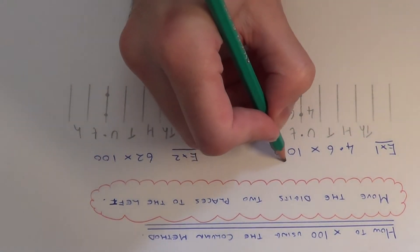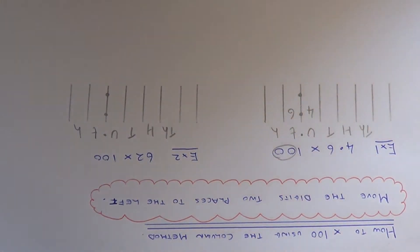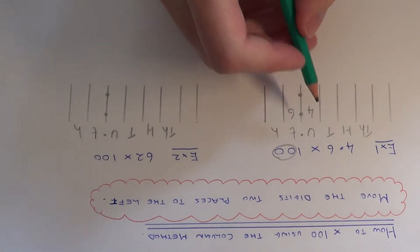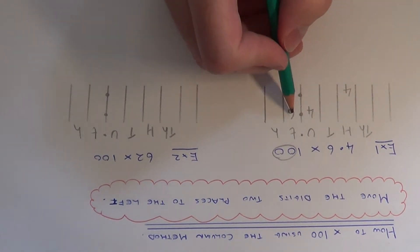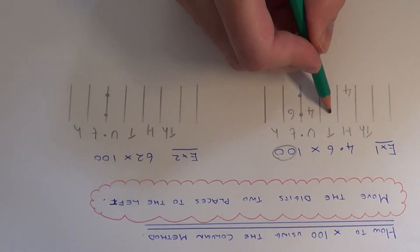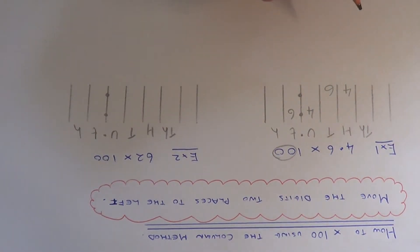Since we're multiplying by 100, we need to move the digits two places to the left. Let's move the 4: one, two, so the 4 will go in the hundreds column. Let's move the 6 two places to the left: one, two, so put the 6 in the tens column.